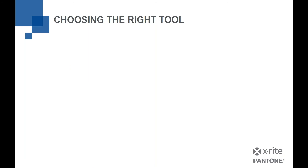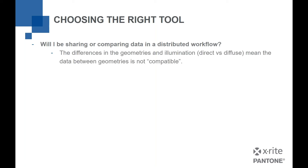Ultimately, choosing the right tool comes down to which geometry is right for what I'm measuring. First, consider: will I be sharing or comparing data in a distributed workflow? If so, differences in geometry and illumination — direct illumination on a 45-0 versus diffuse illumination from a sphere — mean the data between those is not compatible. If I measure a red color with both instruments, they'll both measure it as red, but not the same red. You can't compare 45-0 data to sphere data reliably. Everyone communicating color must use the same geometry.